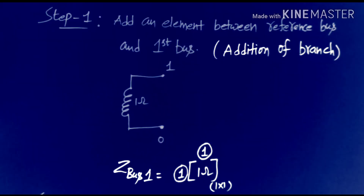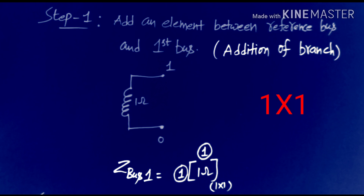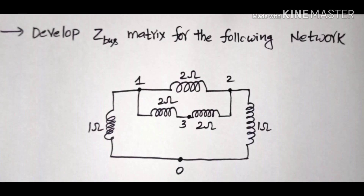In the first step, I added an element between the first bus and the reference bus, so an extra node is created. The order of the matrix increased from 0×0 to 1×1. This is the Z-bus matrix obtained at the final stage of the first step.